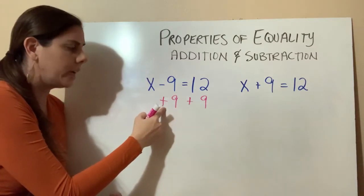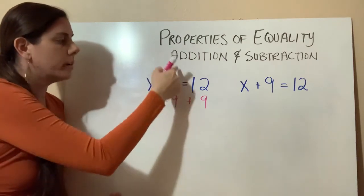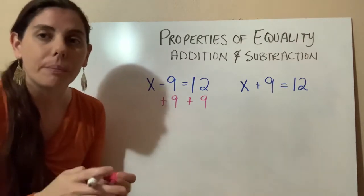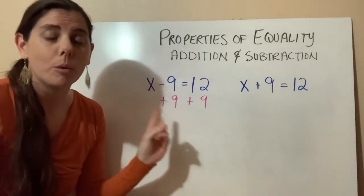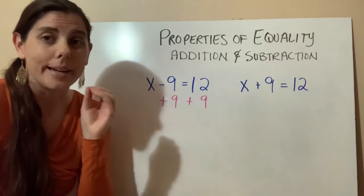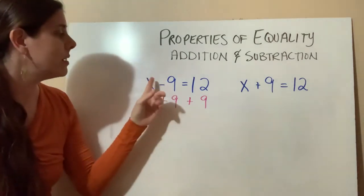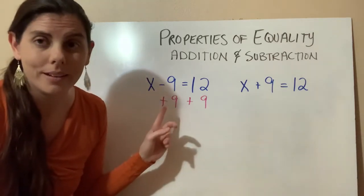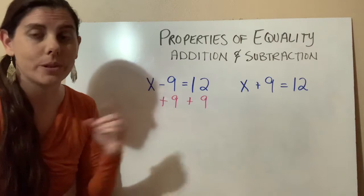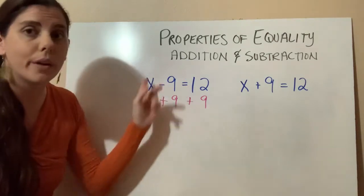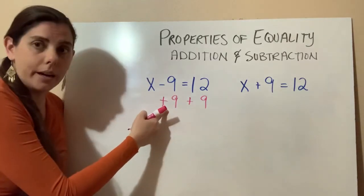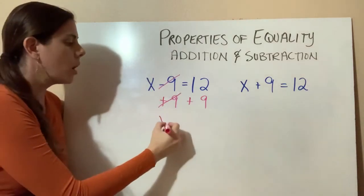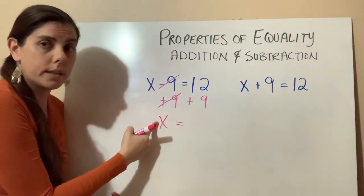Why are we adding 9? Basically, what we're trying to do is get this whole thing equal to 0. The identity property is popping up again. For addition and subtraction, the identity element is 0. We want x minus 0 or x plus 0, because adding or subtracting 0 means the number retains its identity — x just equals x. So our goal is to get this whole thing to equal 0. Negative 9 plus 9 equals 0, they cancel out. Our goal has been achieved: x is by itself on one side of the equal sign.